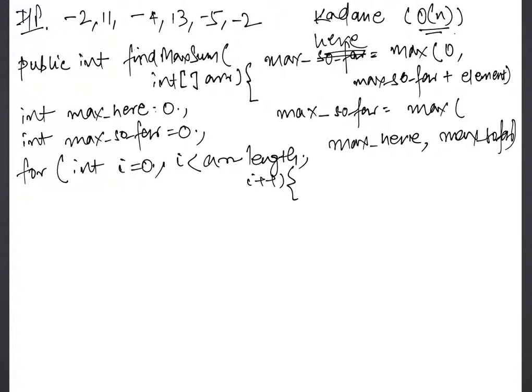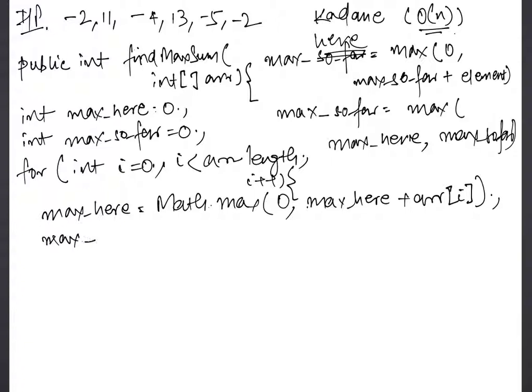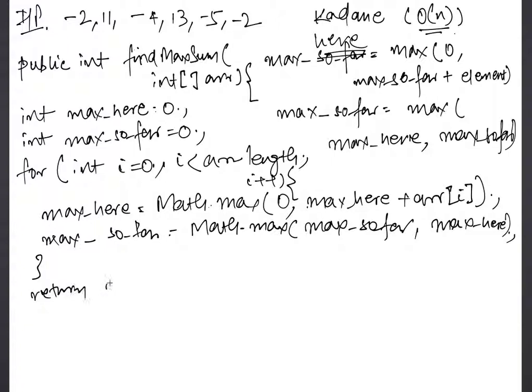Now comes the interesting part. As we know, max_here is nothing but the max of 0 or max_here plus array[i]. And max_so_far is nothing but the max of max_so_far and max_here. Let's close the iteration and we close the loop and we return max_so_far, which will contain the highest sum that is possible from this array.